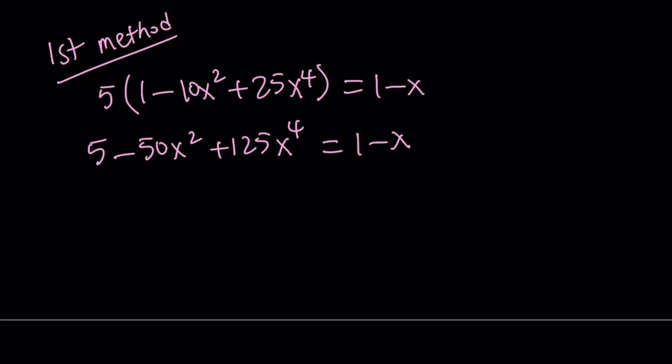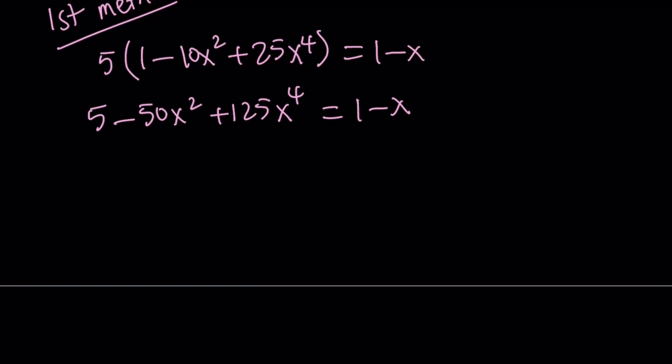Since x to the fourth is already positive on the left-hand side, let's put everything on the left. Bring the 1 minus x over, so you're going to get 125x to the fourth power minus 50x squared plus x, and then finally, plus 5 minus 1, which is 4. And that's equal to 0.